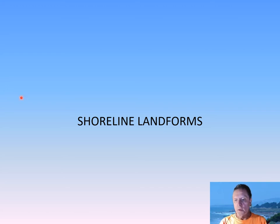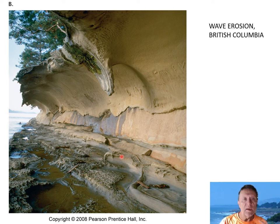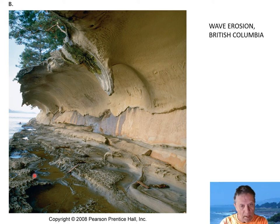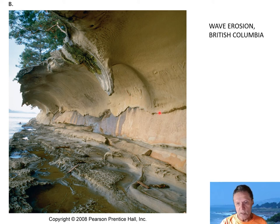Let's talk about some other landforms we see at shorelines — erosional landforms. This is British Columbia, a neat illustration where sandstone has been battered and eroded by waves. They cut away material and hollowed out the sandstone, actually converting it into a wave-like form. So that's an erosional landform.